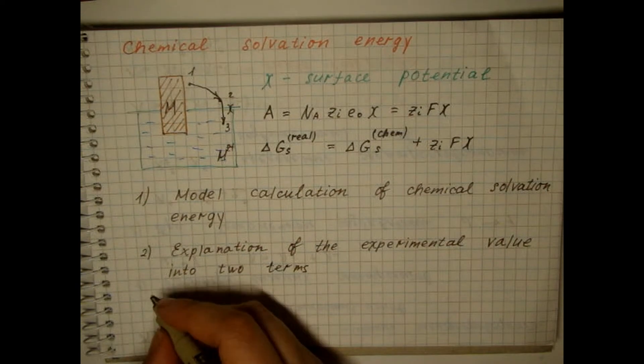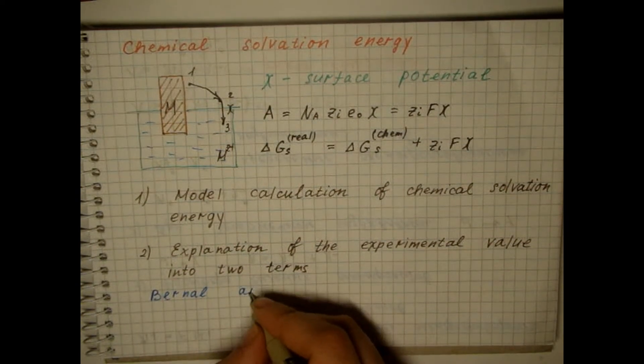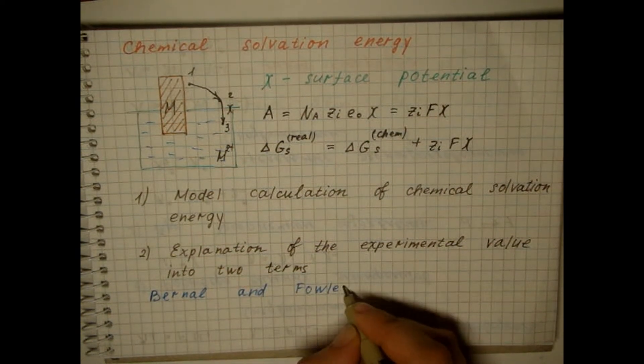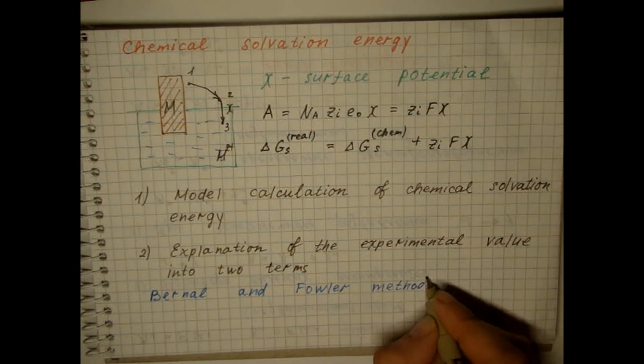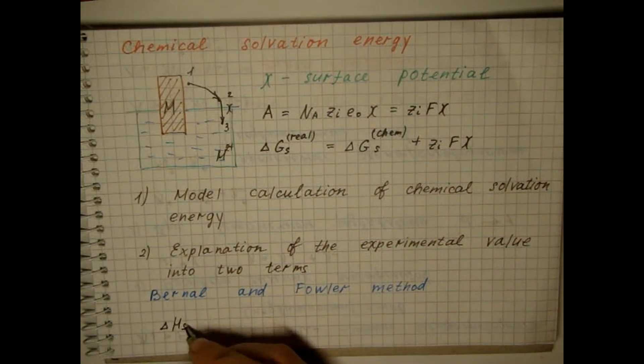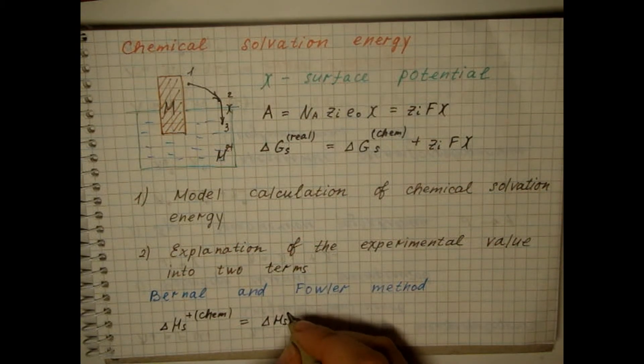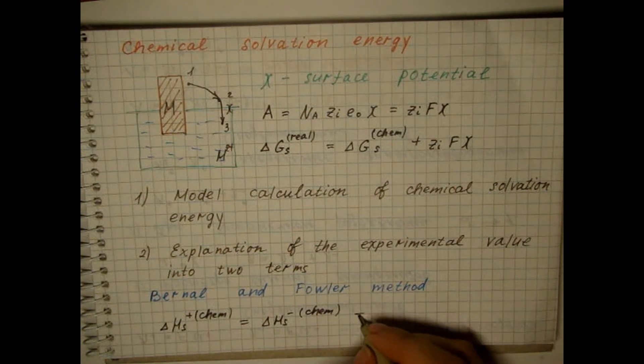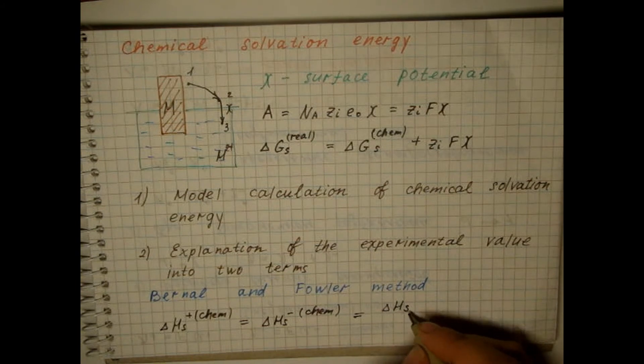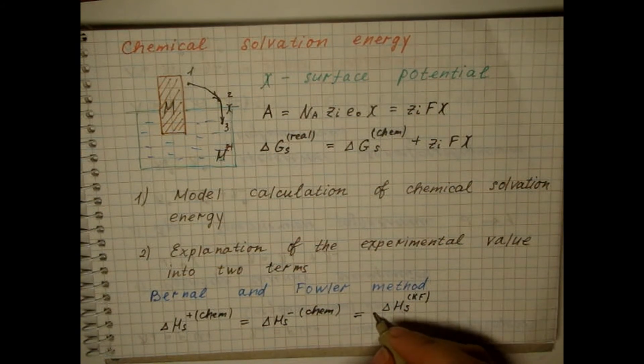For example, the Bernal and Fowler method assumes that for potassium and fluorine ions, since these ions have approximately the same radii, their chemical solvation energies are equal.